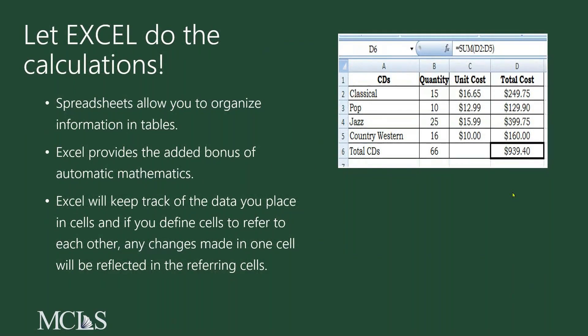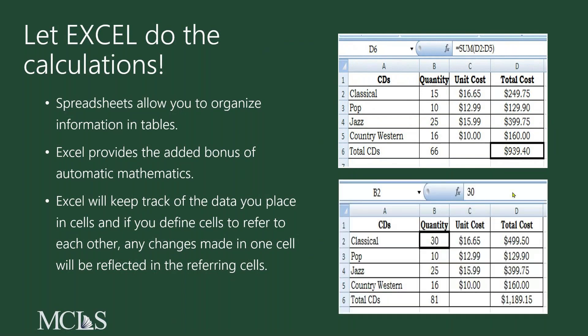Spreadsheets allow you to organize information in tables, and Excel provides the added bonus of automatic mathematics — it has calculations built in. It will keep track of the data you place in cells, and if you define cells to refer to each other, any changes made in one cell will be reflected in the referring cells. Basically, if I take a value like 15 and change it to 30, depending on the calculations I have built into my worksheet, it will update those answers instantly and automatically.